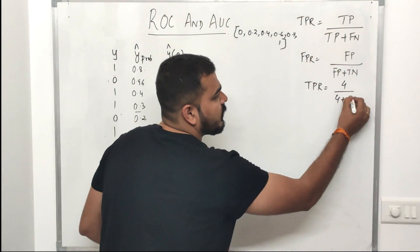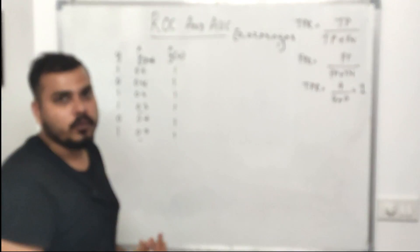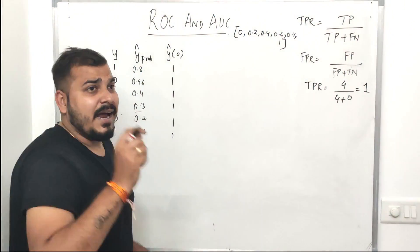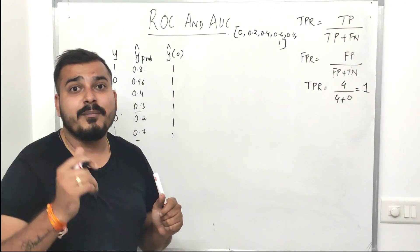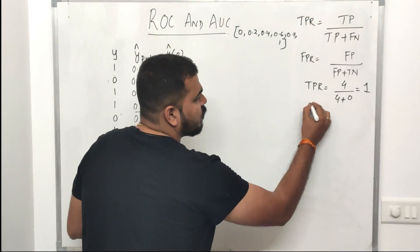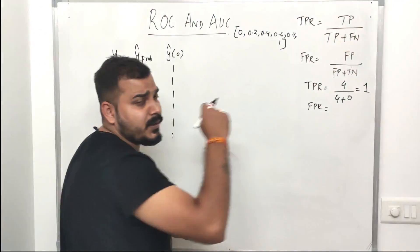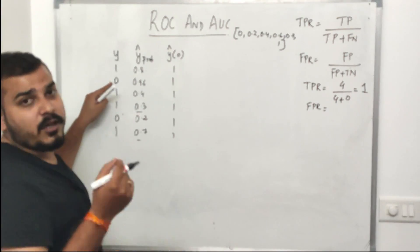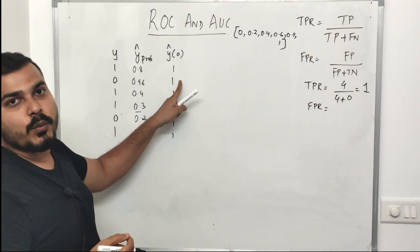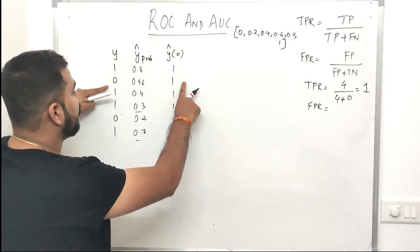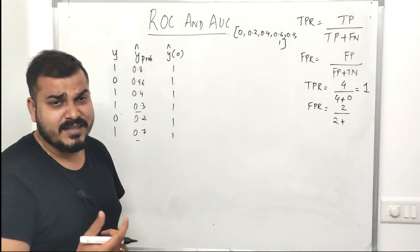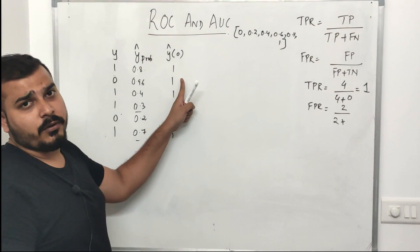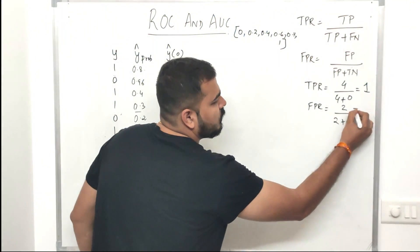My true positive rate is 1. Now I calculate the false positive rate, which is FP divided by FP plus TN. False positive means actual value is 0 but predicted value is 1 — I have 2 false positives. True negative means actual is 0 and predicted is also 0 — in this scenario that is 0. So FPR equals 2 divided by 2 plus 0, which is 1.